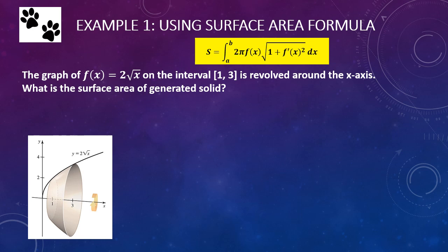So let's see how to apply this — it's very straightforward. I'd like you to try this problem on your own by hitting pause right now. Example 1: using the surface area formula, which you can see highlighted in yellow. The graph of f of x equals 2 times the square root of x on the interval from 1 to 3 is revolved around the x-axis. What is the surface area of the generated solid? Hit pause, set up the equation, and then go ahead and solve it.